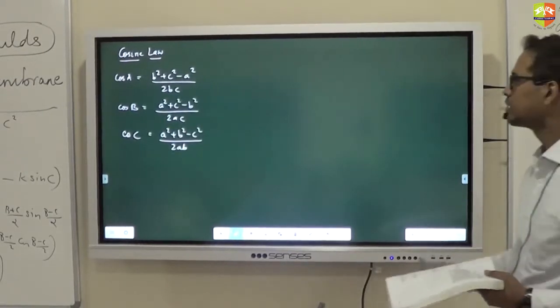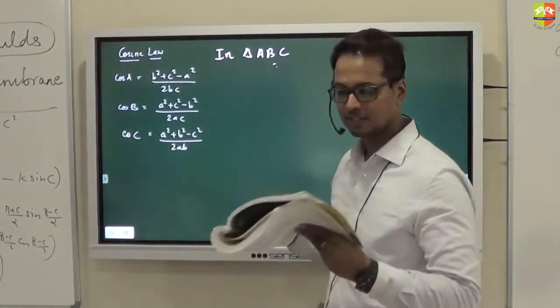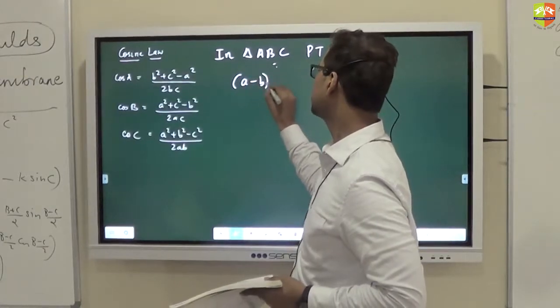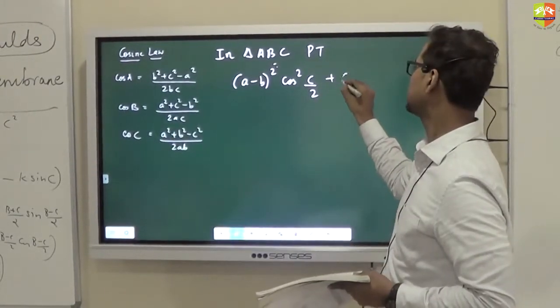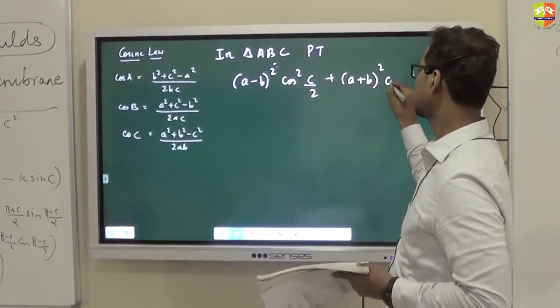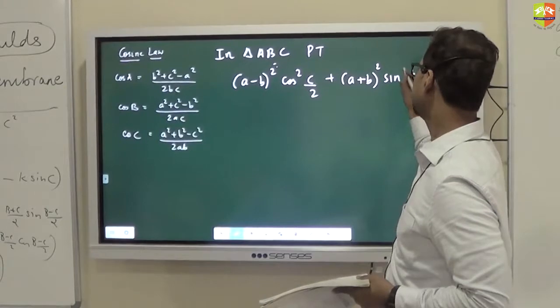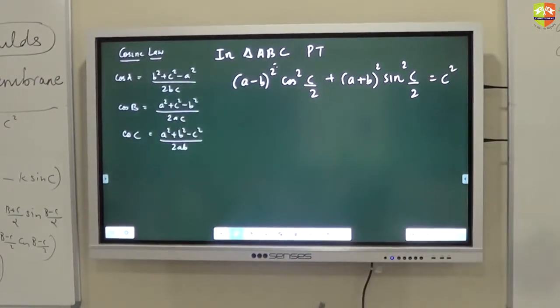I will start with a simpler one. In triangle ABC, prove that (a-b)² cos²(c/2) + (a+b)² sin²(c/2) equals c².